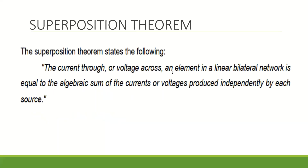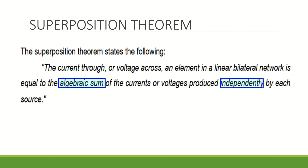Superposition theorem states that the current through or voltage across an element in a linear bilateral network is equal to the algebraic sum of the currents and/or voltages produced independently by each source.